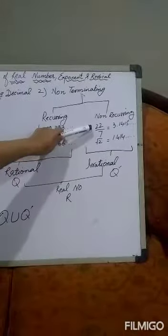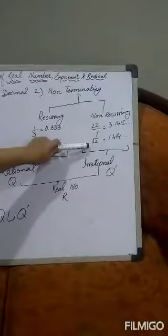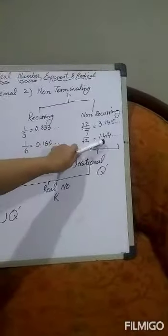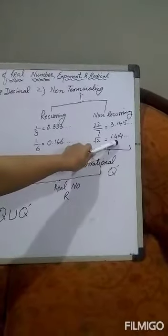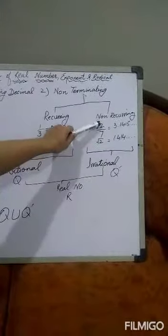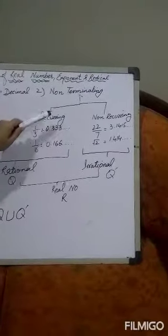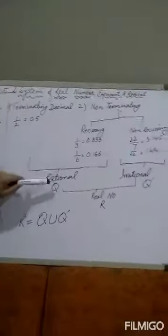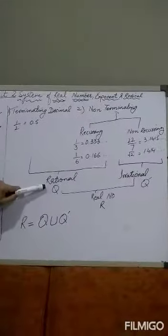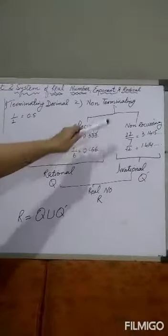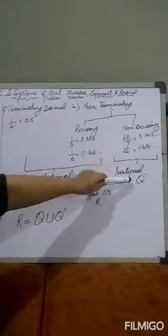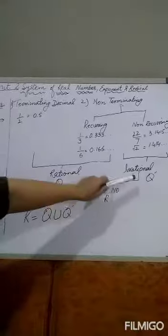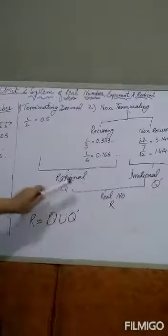For example, 22/7 (the value of pi) and root 2 equal 1.414... — these digits are not the same and do not repeat, so we call them non-recurring. Terminating and non-terminating recurring decimals are rational numbers, denoted Q. Non-terminating and non-recurring decimals are irrational numbers, denoted Q'.